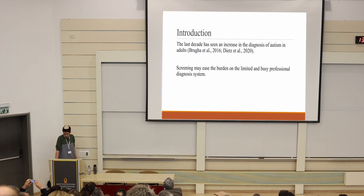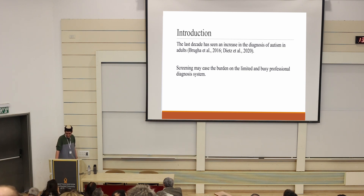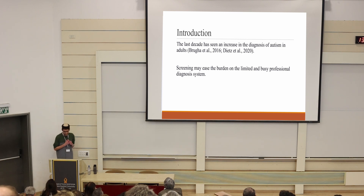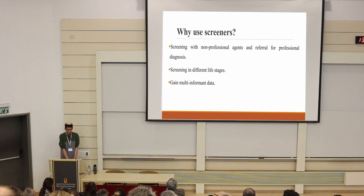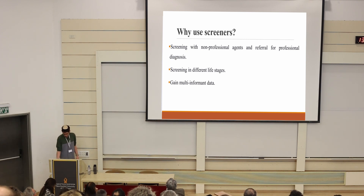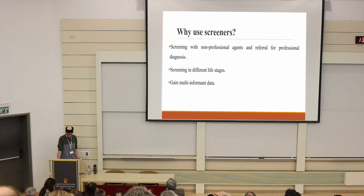Autism diagnosis in adults has increased in the past decade, adding to the strain on the limited professional diagnosis system. To address this challenge, screening tools for autism, like the AQ or the SRS, can help identify potential cases and ease the burden on the diagnosis system. Screening for autism can be conducted by non-professional agents, such as teachers, parents, or other community members, and they can refer individuals to professional diagnosis.